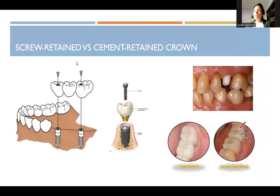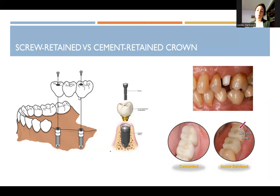Screw-retained versus cement-retained: cement-retained crowns are often used in anterior teeth, but there's a risk of leaving cement behind — it sticks out like a piece of calculus and can cause bacterial growth, tissue inflammation, and bone loss. There have been cases where a large chunk of cement caused significant bone loss. Screw-retained is often better because you can just unscrew it and put in a new crown or fix something, whereas cement-retained makes that much more difficult.